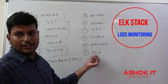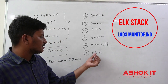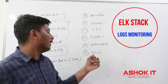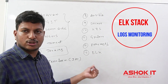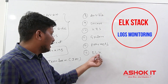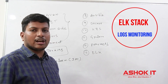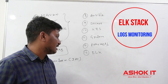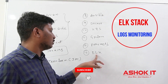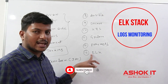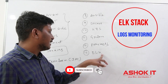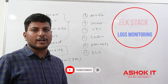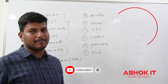For application logs monitoring we are going to use ELK. ELK is the combination of three products: Elasticsearch, Logstash, and Kibana. Elasticsearch is used to store the logs. Logstash will collect the logs from all the nodes in the cluster and store them in Elasticsearch. Kibana will provide the UI to get the logs of our application.